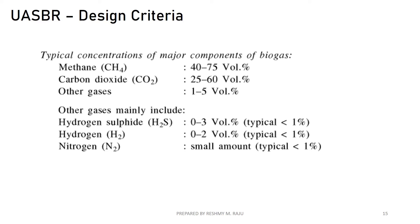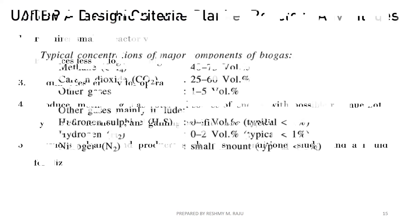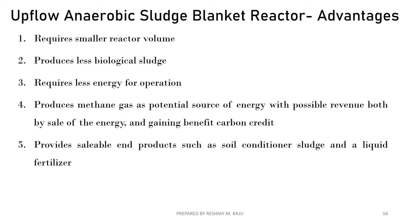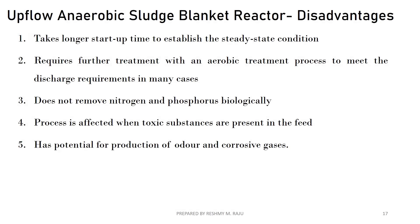Advantages of the UASB reactor include: requires small reactor volume, produces less biological sludge, requires less energy for operation, produces methane gas as a potential energy source with possible revenue, carbon credit benefits, and provides saleable end products such as soil conditioner sludge and liquid fertilizer.